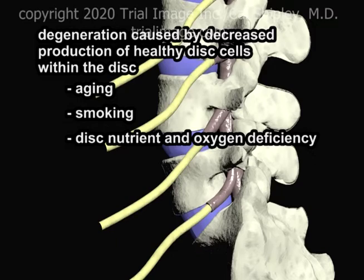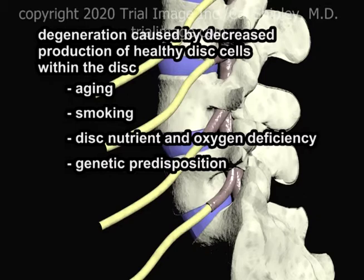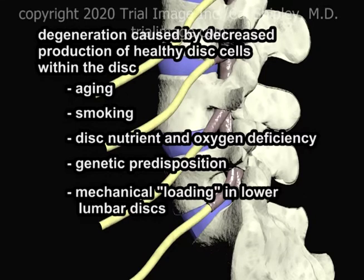Nutrient and oxygen deficiency appears to be aggravated by both aging and smoking. Additional contributing factors include genetic predisposition and mechanical loading, particularly in the lower lumbar spine, which is a focal point for stress transmitted from the spine above.